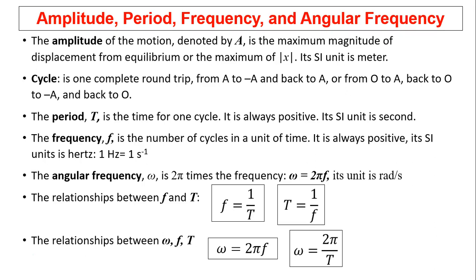A cycle is one complete round trip from A to negative A and back to A, or from O to A back to O to negative A then back to O.